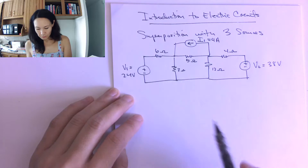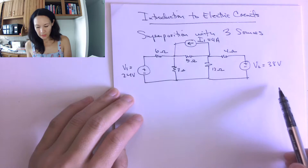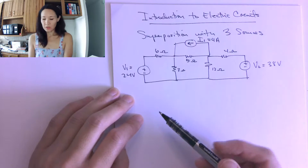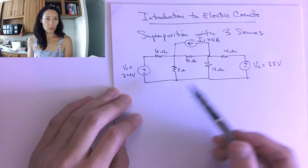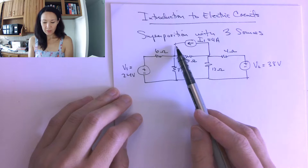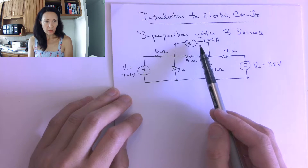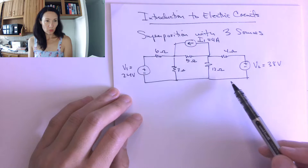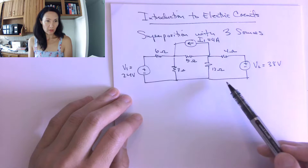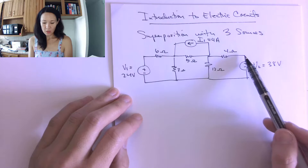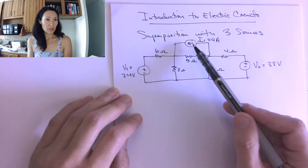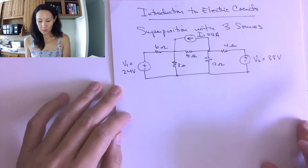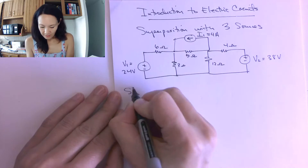We want to evaluate the circuit with only one source in it at a time. To turn off the other sources, we're going to replace a current source with an open wire, and we're going to replace a voltage source with a short circuit — basically, we'll short out the voltage source and remove the current source.